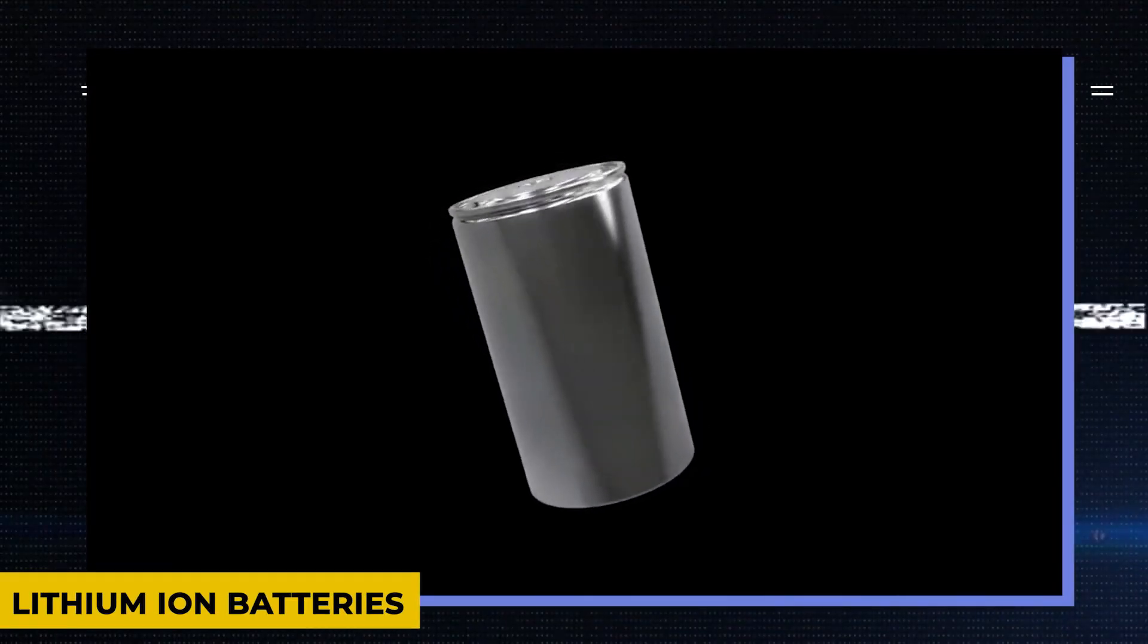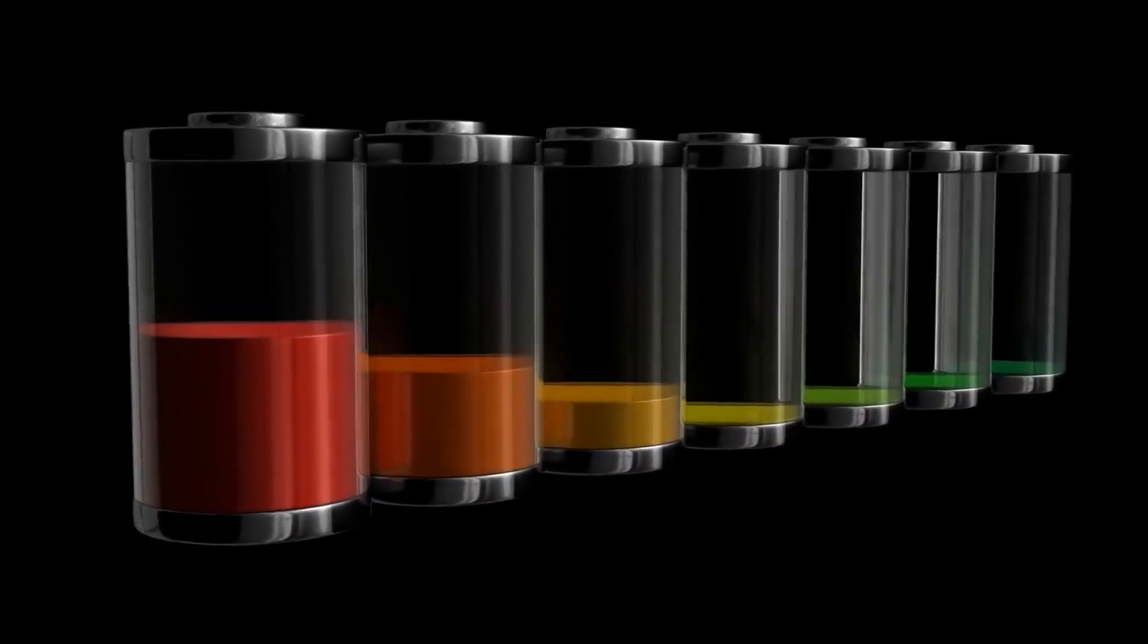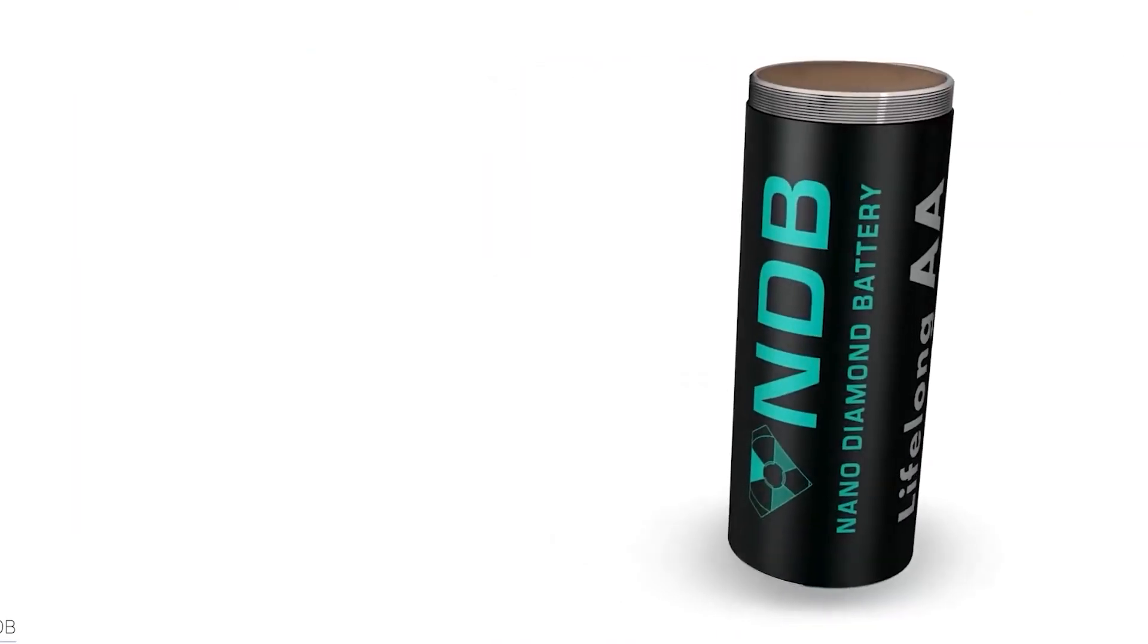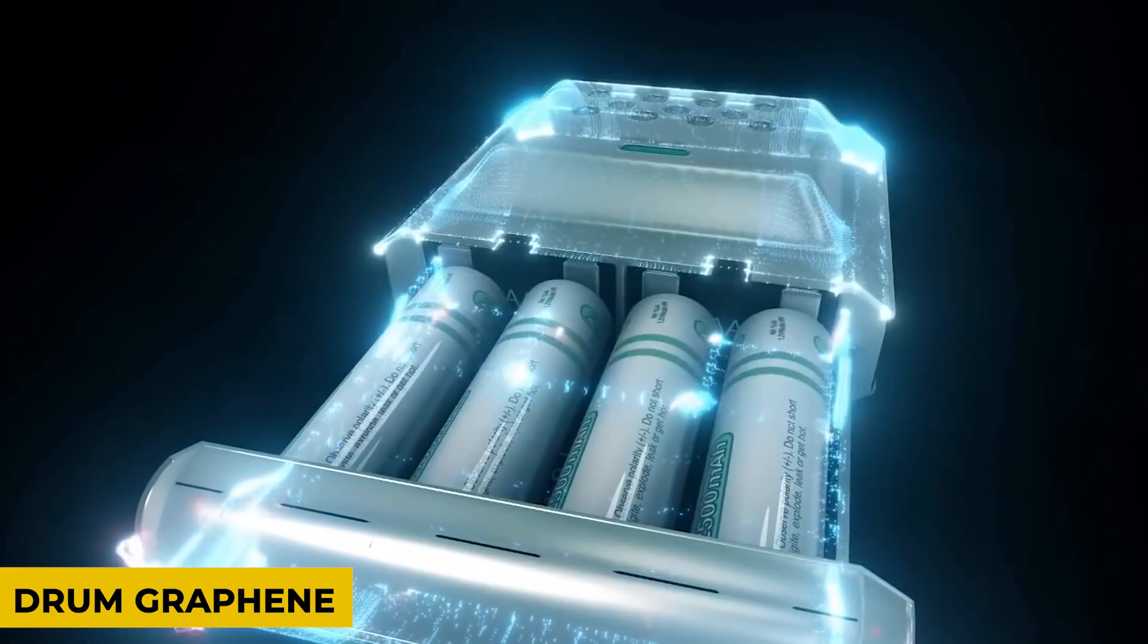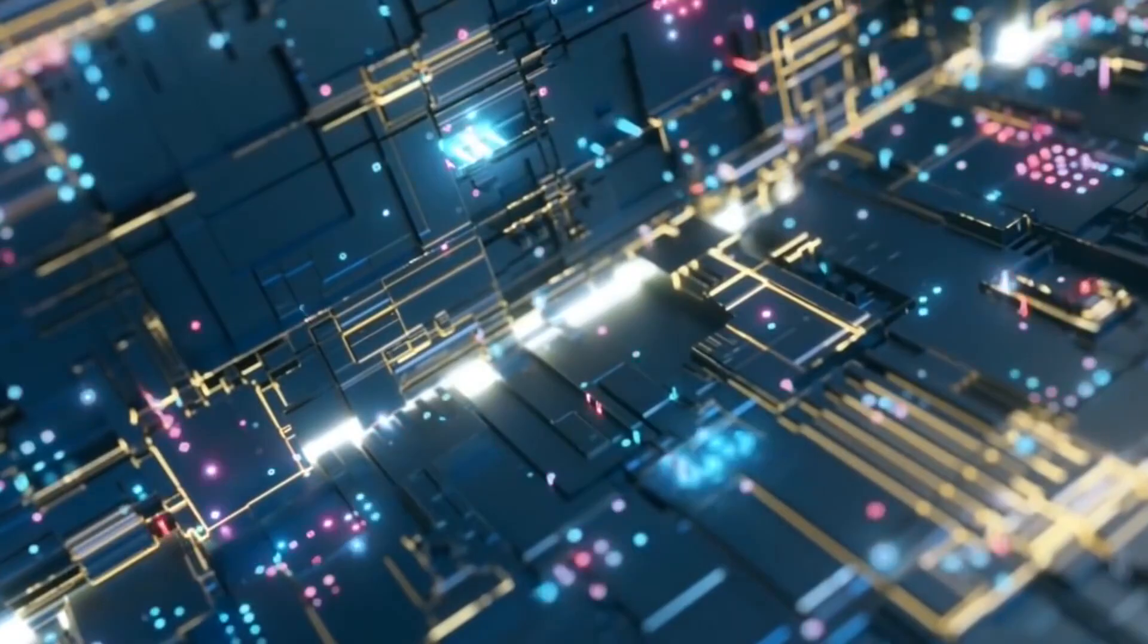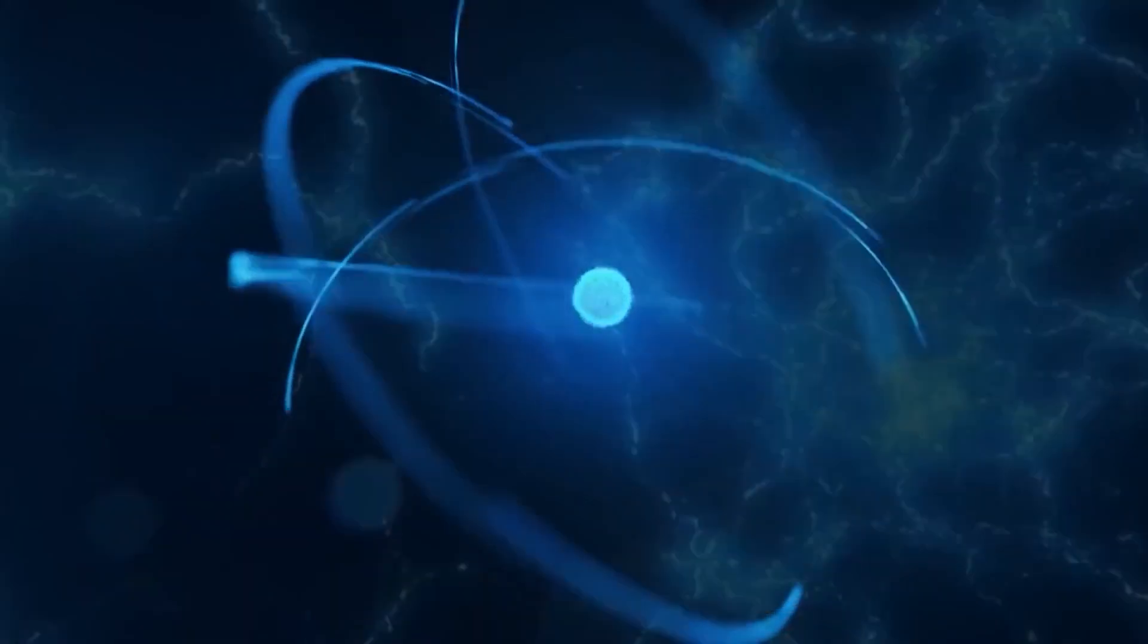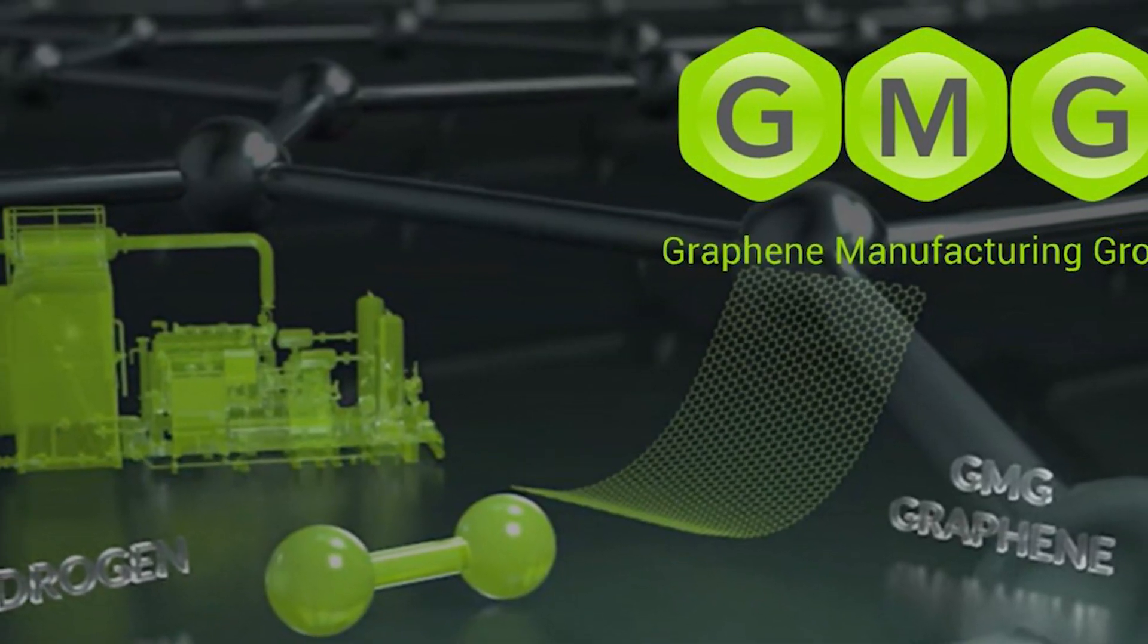However, the lithium-ion batteries we currently use have significant drawbacks. Therefore, one Australian business is working hard to develop a better battery using graphene, the strongest substance known to man. Graphene is 300 times stronger than steel thanks to a new groundbreaking manufacturing technique developed by an Australian company called Graphene Manufacturer.